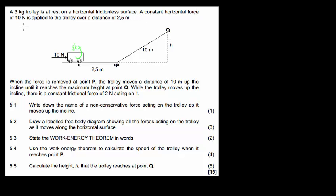A constant horizontal force is applied of 10 newtons, so someone is pushing this thing at 10 newtons, on the trolley over a distance of 0.25 meters, so it's been pushed up to that point. When the force is removed at point P, so now they stop pushing it, the trolley moves a distance of 10 meters up this incline, until it reaches a maximum height of Q — it still has momentum, but then it's going up a hill, up to that point.